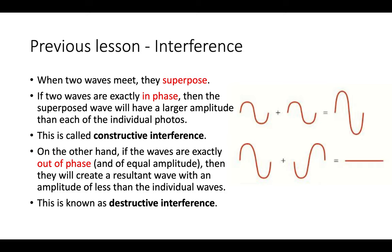Thinking back to 12.1: when two waves meet, they superpose. If the two waves arrive in phase — two peaks or two troughs arrive at the same point — the superposed wave has a larger amplitude than each individual wave. That's called constructive interference. On the other hand, if the waves are out of phase — a peak arrives at the same time as a trough — the resultant amplitude is less, perhaps zero. That's known as destructive interference.